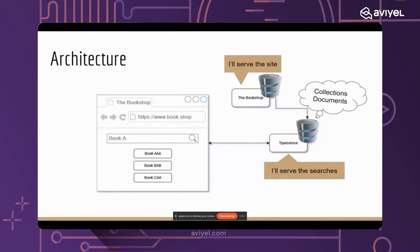Let me show you how an application with Typesense looks. Imagine a bookshop where people can come, search for books, and buy them. There is a browser client — it can be React, Vue.js, or anything. The frontend has a backend bookshop service that serves the site. Whenever someone views a book or tries to buy it, that backend API handles it. There is also a separate Typesense service, responsible solely for serving searches.